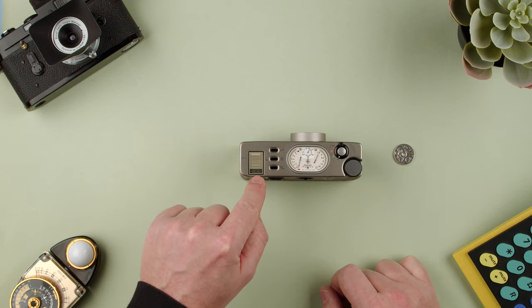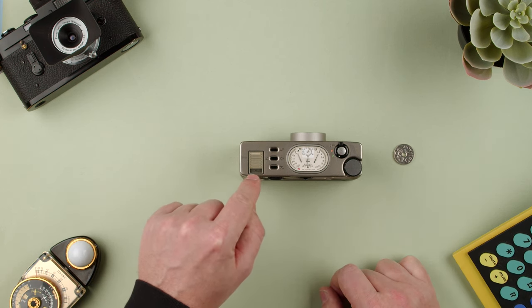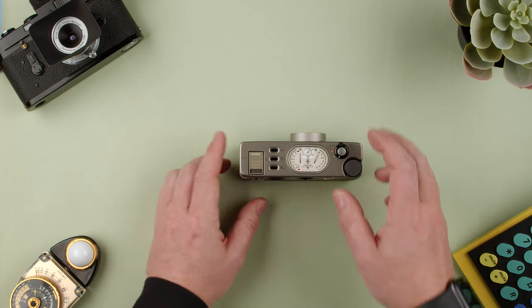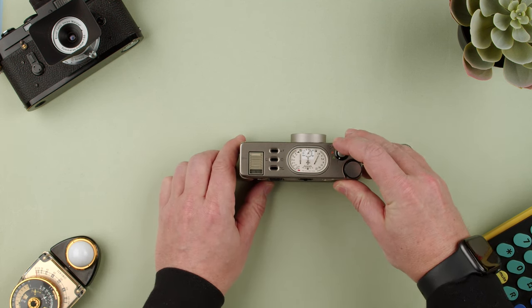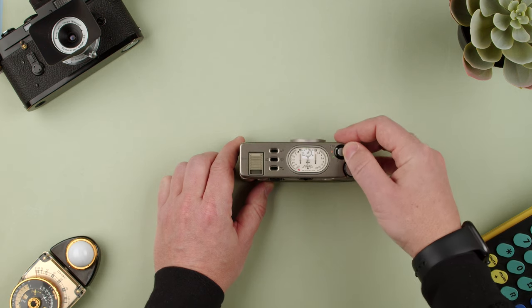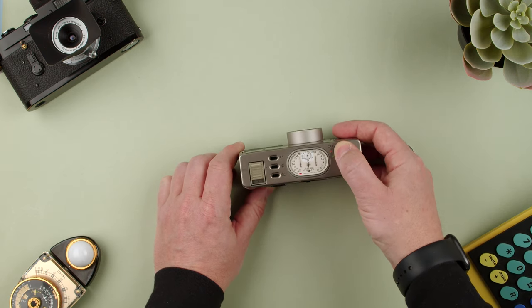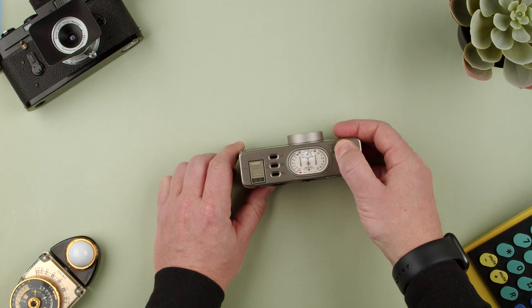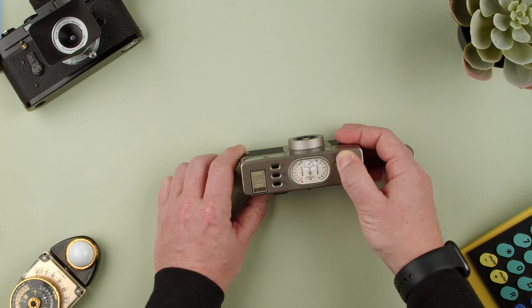You have the frame counter here and different things you can see on this viewfinder. That's basically all there is to this camera. Let's finish the roll so you can see what it does when it finishes.